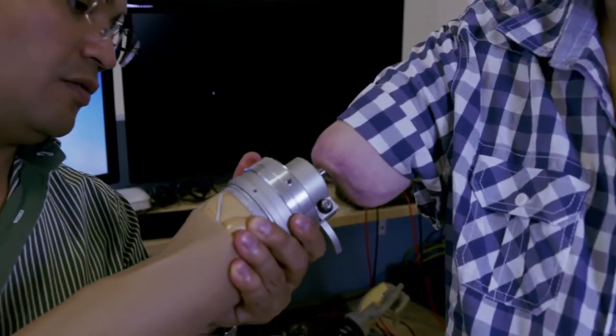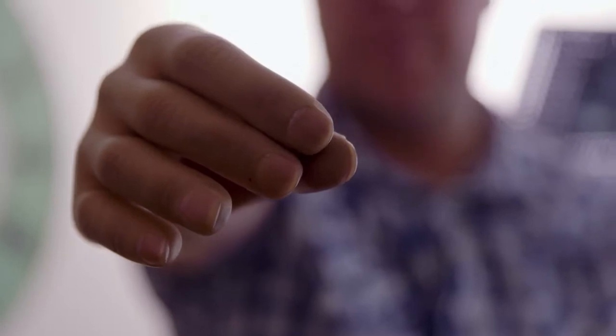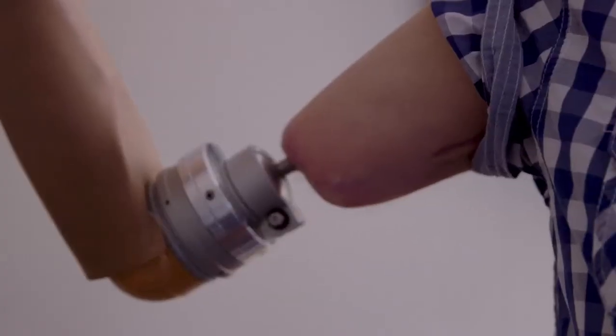The way this hand knows what to do is because Magnus is sending a signal from his brain, the nerves, to the electrodes that are implanted on his arm. And those signals travel through the implant to the hand and then the hand activates.